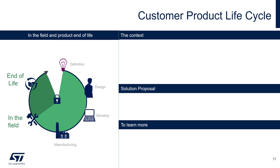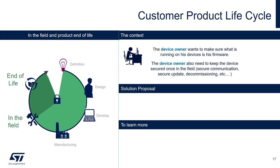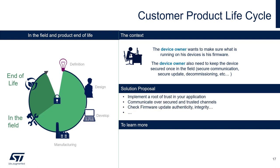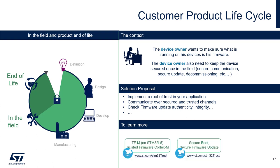The last step of the product lifecycle is the field and end of life. The device owner wants to ensure the authenticity of the firmware running on the device, communicate with it securely, and perform secure updates if needed. To address this, we need to implement a root of trust in your application, communicate over a secure and trusted channel, and check firmware update authenticity and integrity — what we often call secure boot and secure firmware update. We also provide packages for this: the SBSFU with secure boot and secure firmware update, and on the Cortex-M platforms, the TFM (Trusted Firmware for Cortex-M), which relies on the ARM PSA initiative.